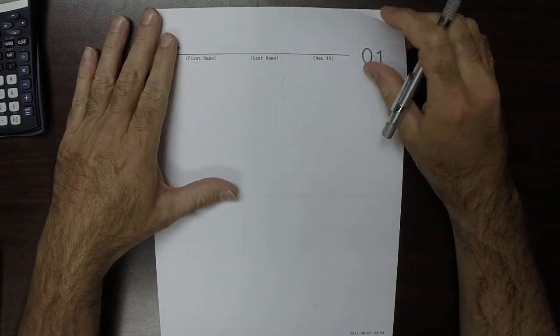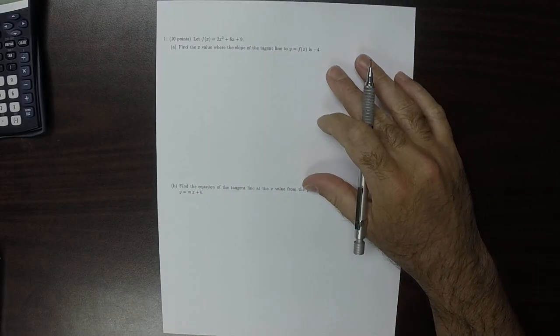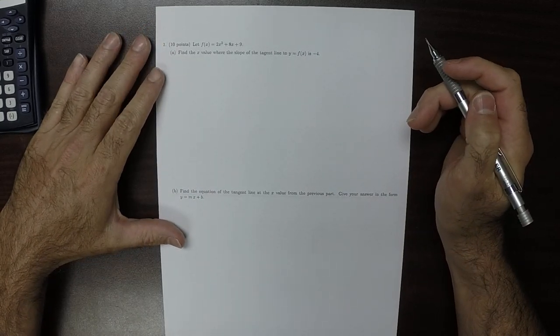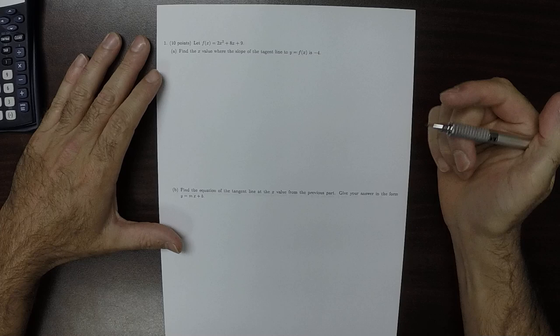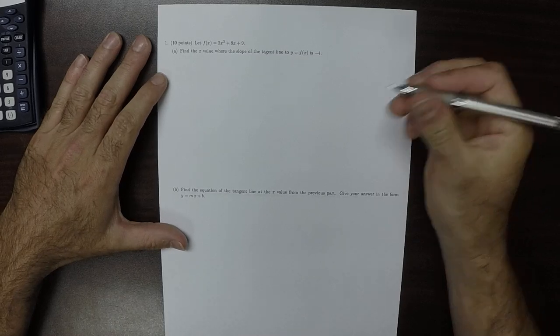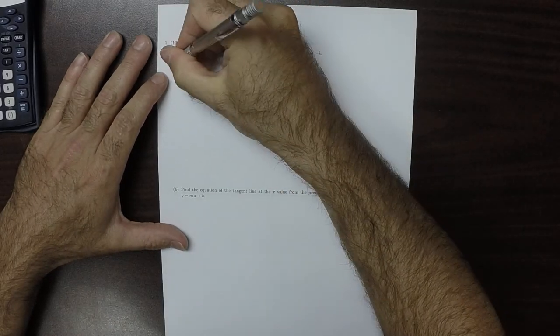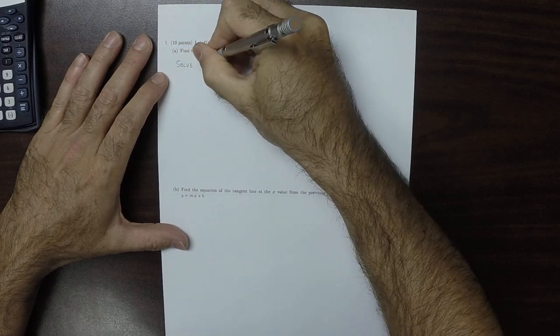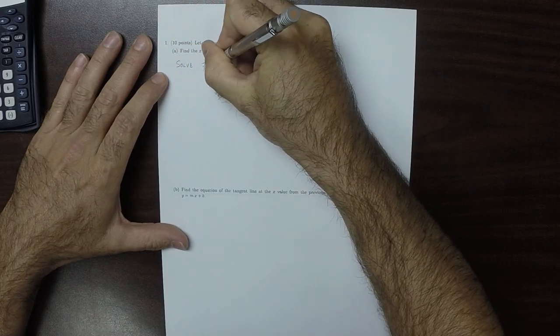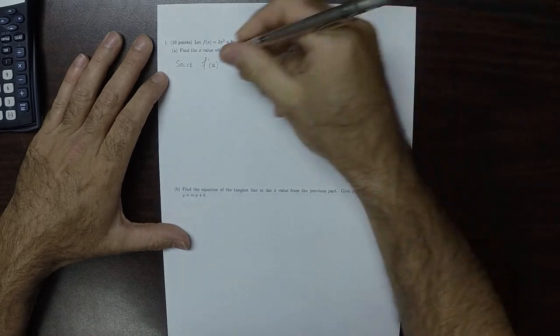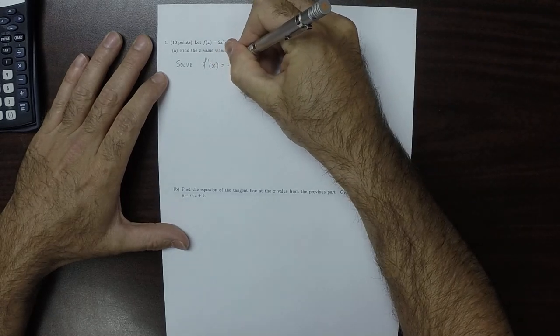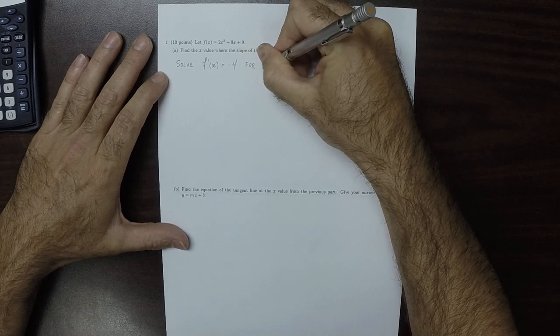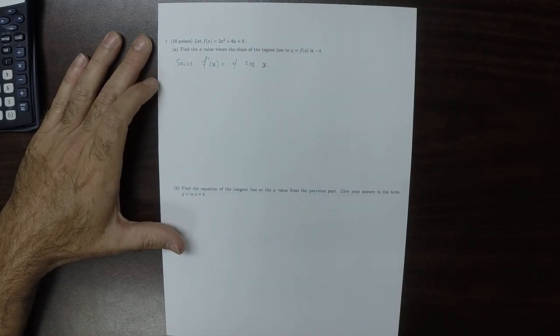This is the solution to quiz one. So part A is saying that what we need to do is solve the derivative of f at x equal to negative 4 for x. So that's a translation of those instructions.